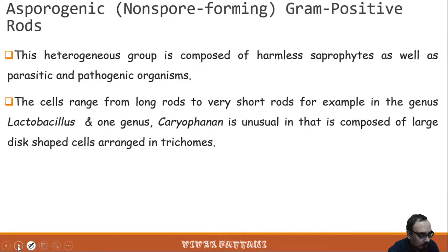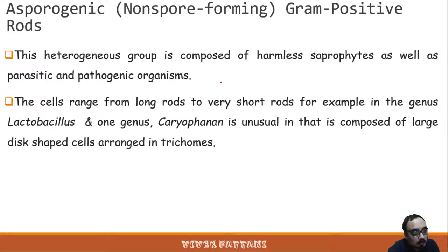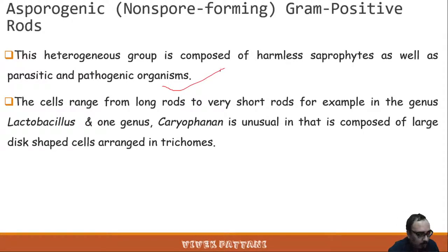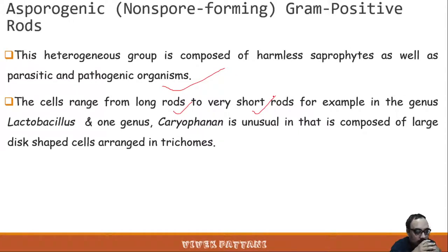Moving towards the asporogenic gram-positive rods: this heterogeneous group is composed of harmless saprophytes as well as parasitic and pathogenic organisms. Cells range from long rods to very short rods — for example, in the genus Lactobacillus. The genus Caryophanon is unusual in that it is composed of large disc-shaped cells arranged in trichomes.